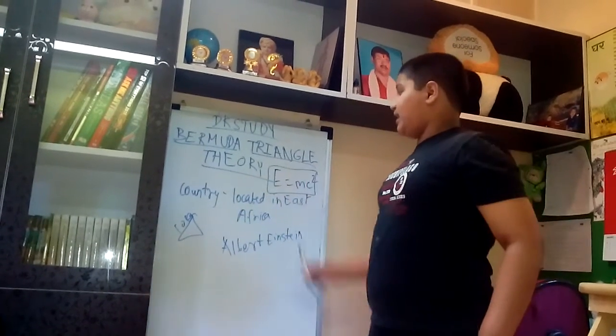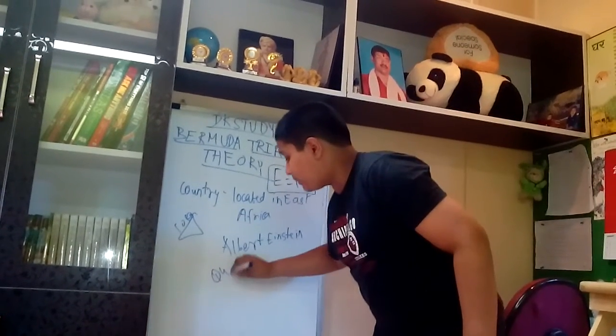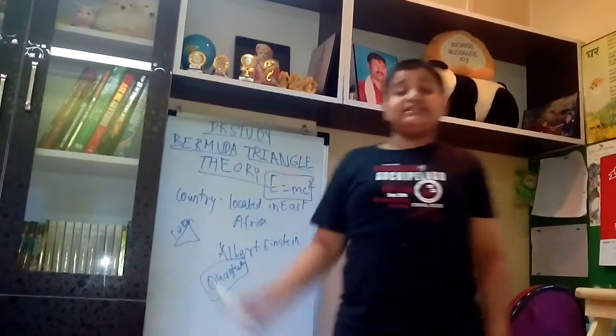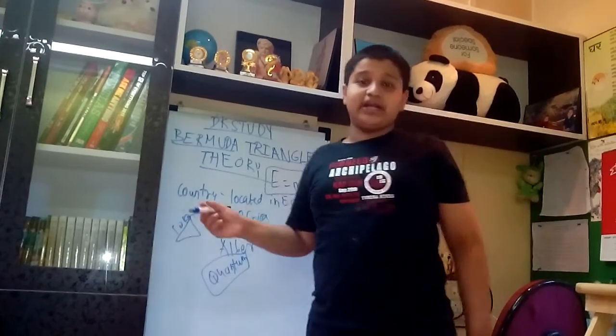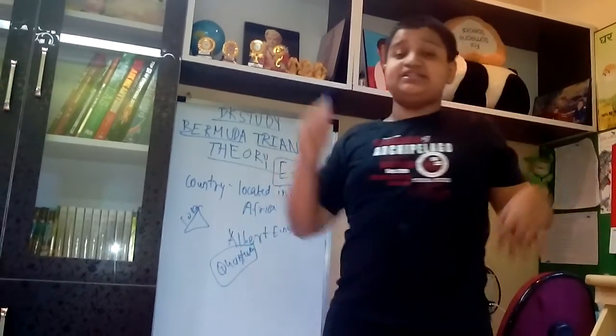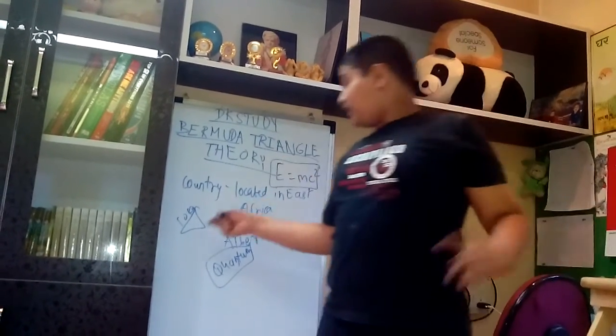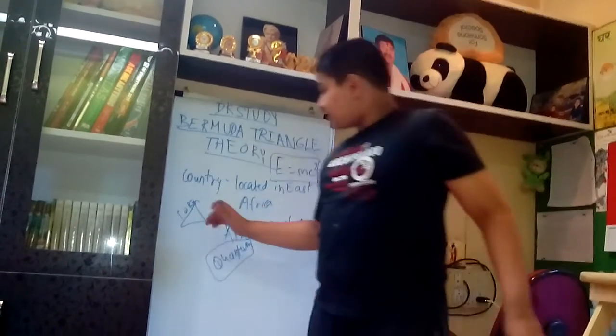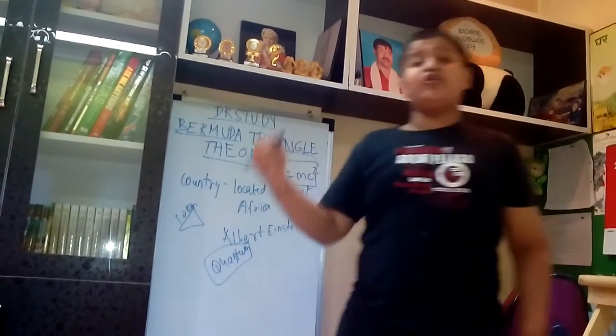So according to this theory and the quantum mechanical theory, you can say that the Bermuda Triangle is just a place where, instead of water which may look as water, it has some amount of air in it. It has some amount of helium in it.